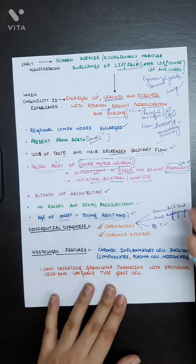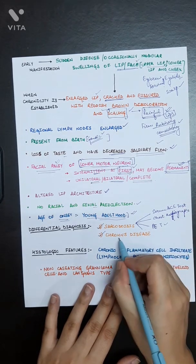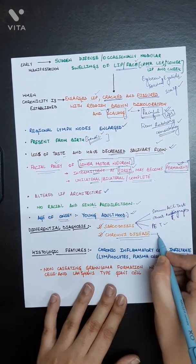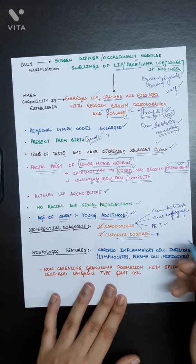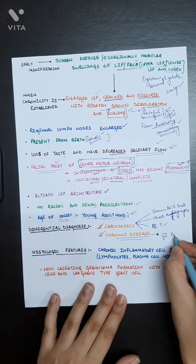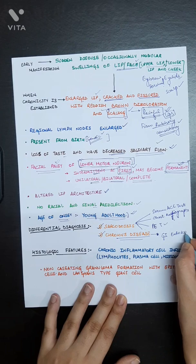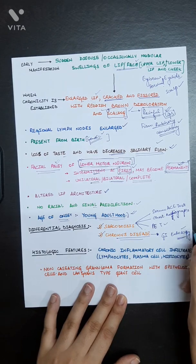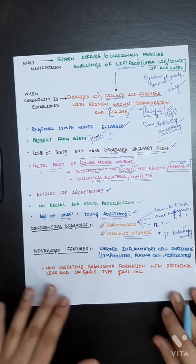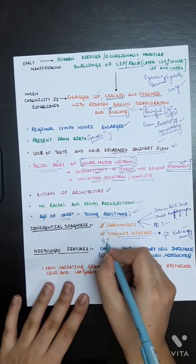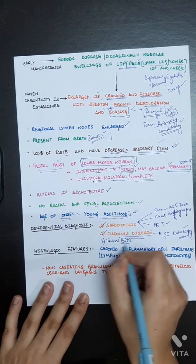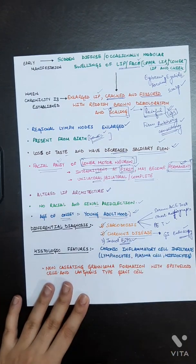To rule out whether it is Crohn's disease, a test can be performed. That is gastrointestinal endoscopy should be done. These are the differential diagnosis of cheilitis granulomatosa. Insect bite is also a differential diagnosis.